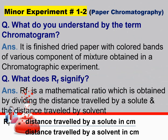Another question: what do you know by the term chromatogram? It is a finished dried paper with colored bands of various components of mixtures obtained in a chromatographic experiment. Another question: what does RF signify? In this experiment we are supposed to calculate the RF value. The RF value is a mathematical ratio obtained by dividing the distance traveled by the solute in centimeters by the distance traveled by the solvent in centimeters.